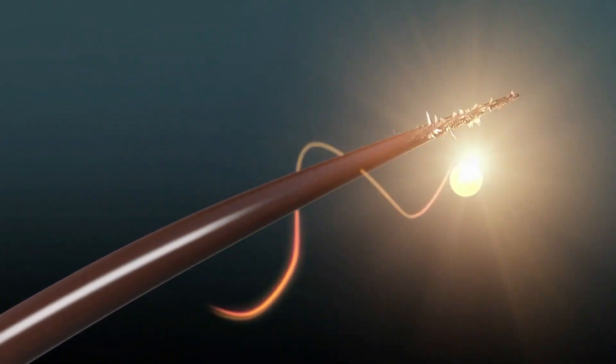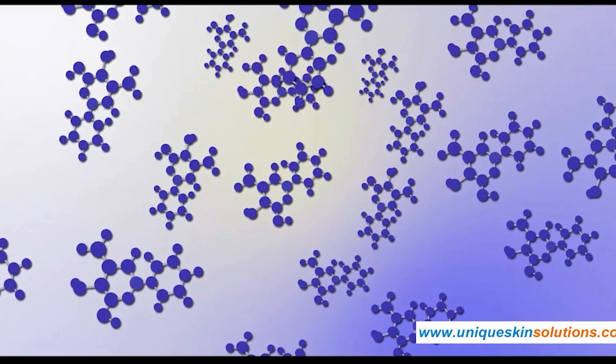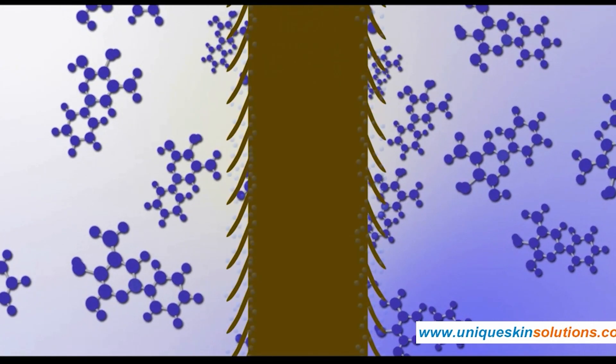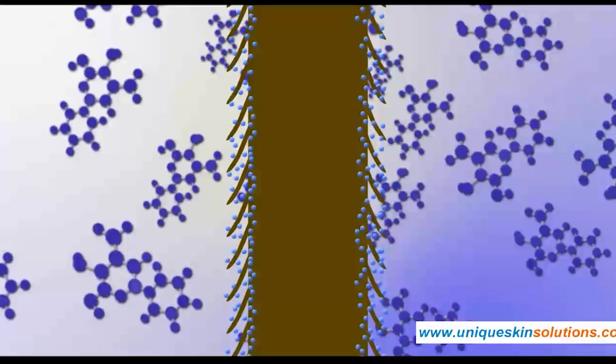Semi-permanent dye contains molecules of pigment so tiny that they can slip between the scales of the cuticle and stick to the cortex. But it's still more paint-like - it doesn't chemically react with anything in the hair. So a semi-permanent dye lasts about 12 shampoos.